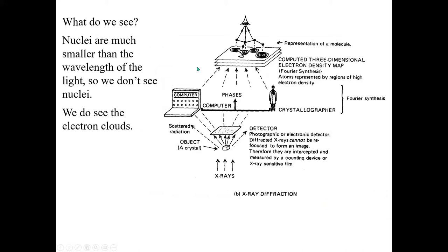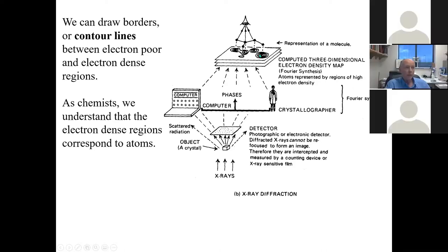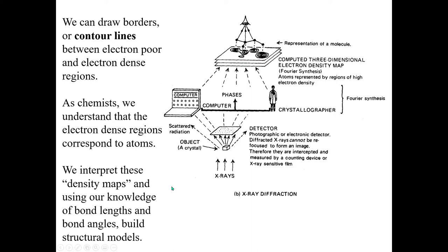What do we see when we do a Fourier synthesis? Do we see the nuclei of the atoms? No, because the nuclei are still far smaller than the wavelength of the x-ray light. But what we do see are the electron clouds. We can draw borders between areas of low and high electron density — contour lines — and see where the peaks are. We understand as chemists that that's where the atoms are. We then use our knowledge of bond lengths and bond angles to build structural models. That is our interpretation of the x-ray crystallography.